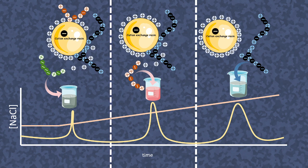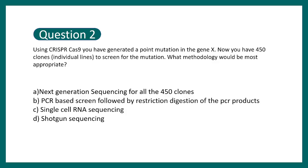Next we go to another question where we can understand some application of PCR, restriction enzyme, etc. Using CRISPR-Cas9 you have generated a point mutation in gene X. Now you have to screen 450 clones or individual lines to screen for the mutation. What methodology would be appropriate?